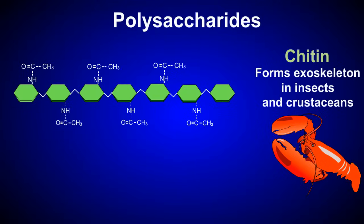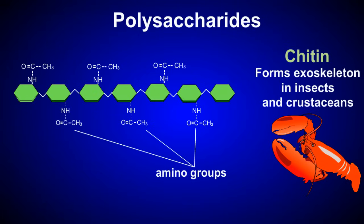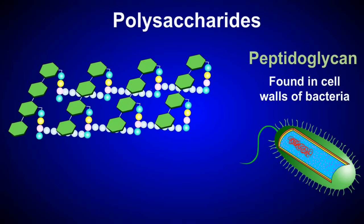Chitin is a structural polysaccharide found in animals and fungi. It makes up the exoskeleton of insects and crustaceans, and its unique properties are a result of chitin having amino groups attached to its sugar monomers. Peptidoglycans are complex polysaccharides found in the cell walls of bacteria. The macromolecule is both flexible and rugged, and each monomer of the polysaccharide has a peptide chain attached to it.